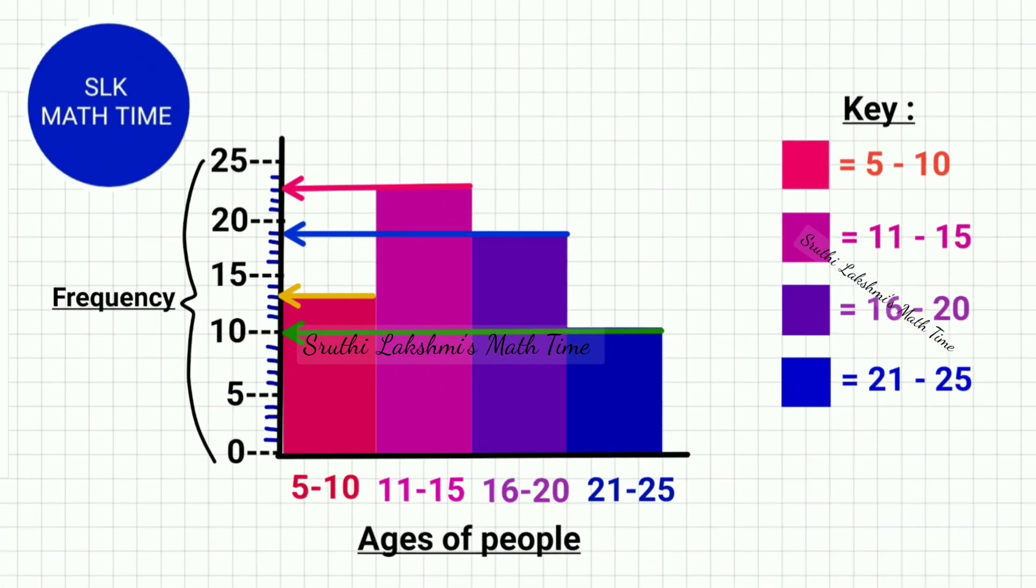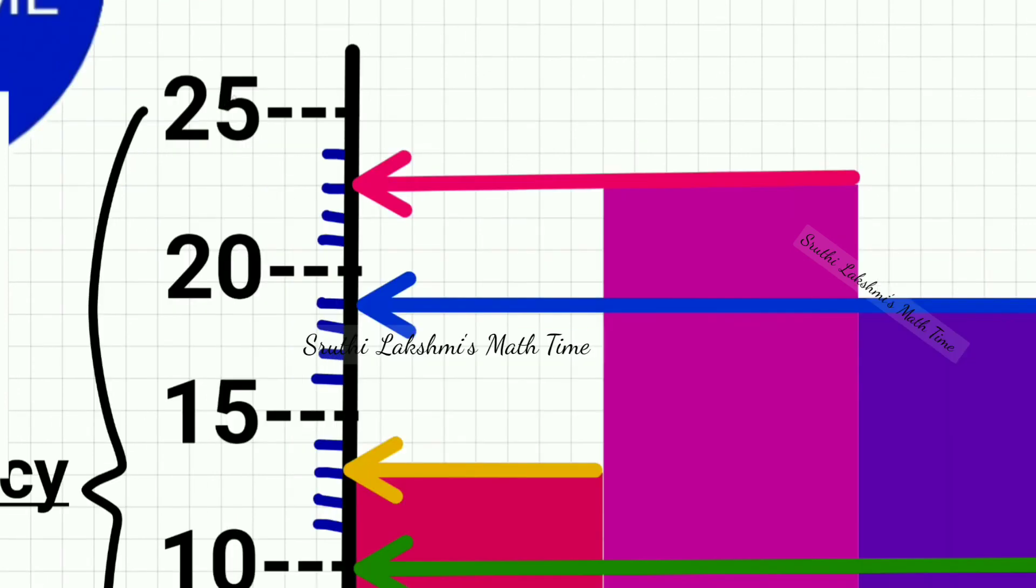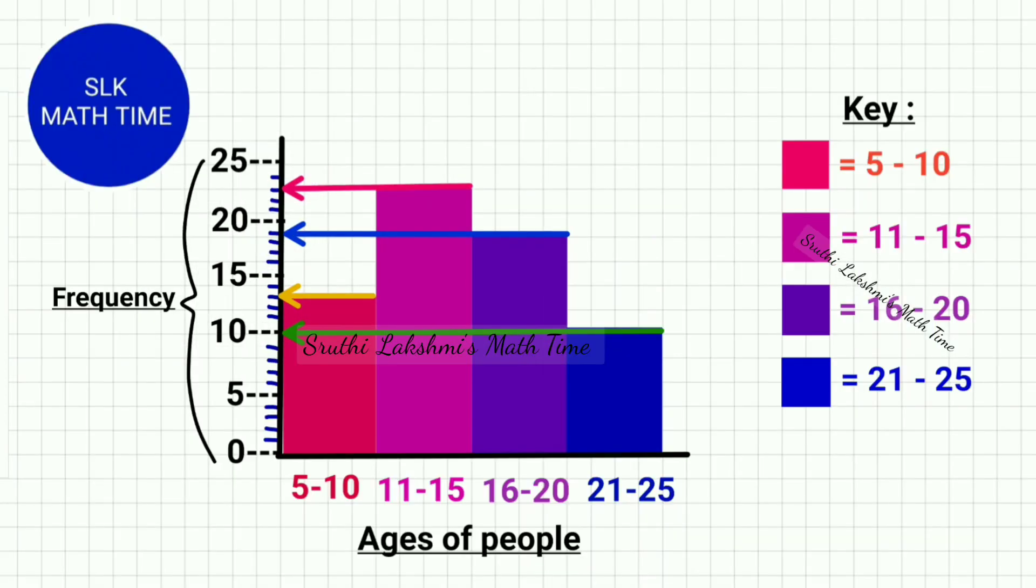So I want to know the number of people in the age of 11 to 15 coming to my party. So as you see here, this is 25 and 20. So it's between both these numbers. This is 21, 22, 23. So there are 23 people in the age of 11 to 15 attending my party.